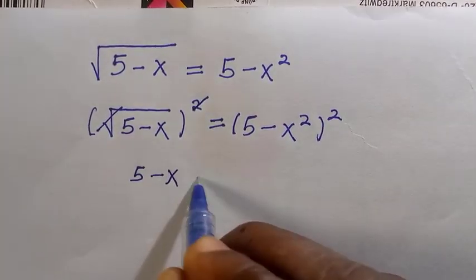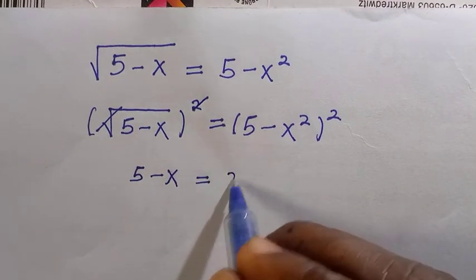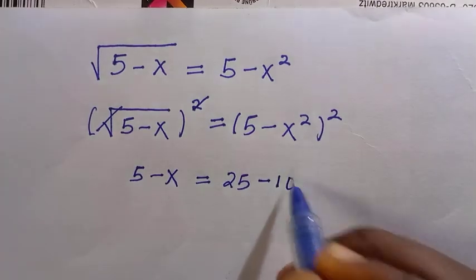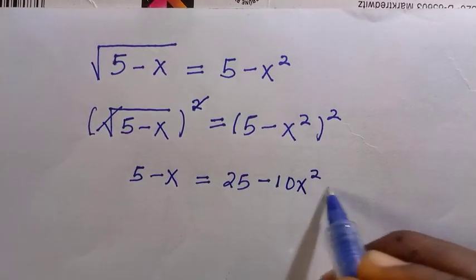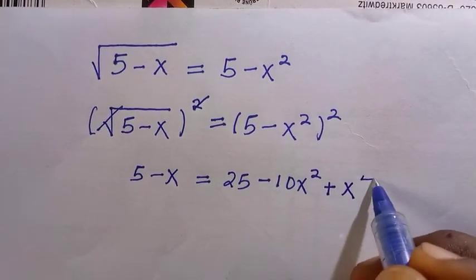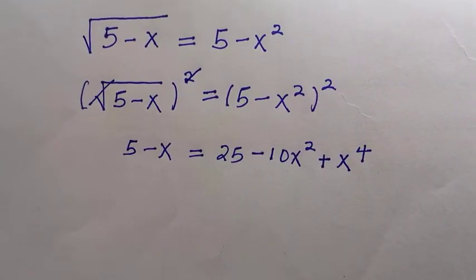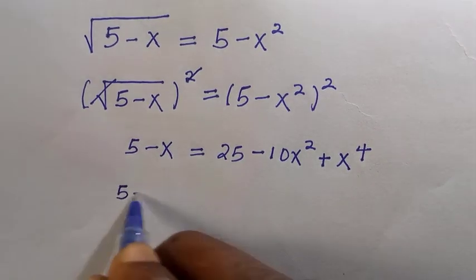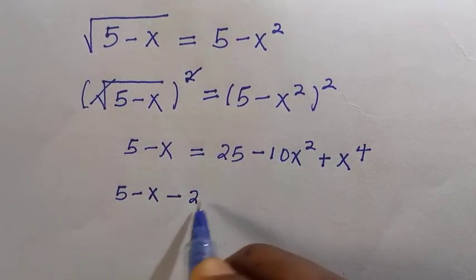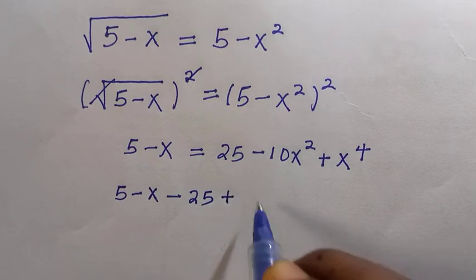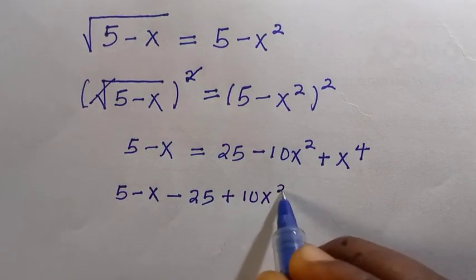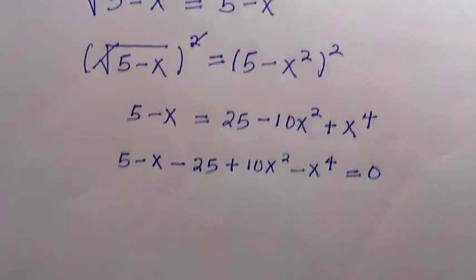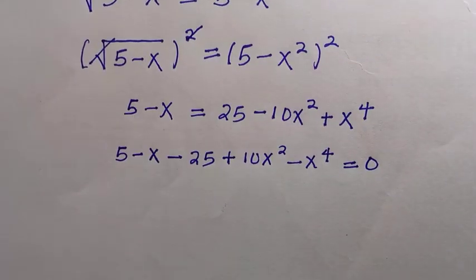After squaring, 5 minus x equals the expansion, which becomes 25 minus 10x² plus x⁴. The next step is transferring all terms from the right-hand side to the left-hand side, giving us negative 25 plus 10x² minus x⁴ equal to zero.